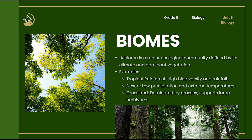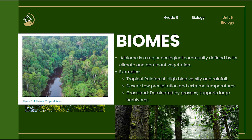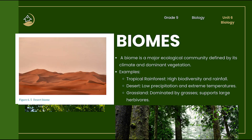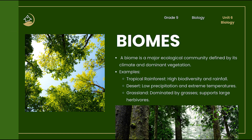Now let's talk about biomes. A biome is a large region of the earth defined by its climate, soil, and dominant plant life. Common biomes include tropical rainforest, desert, and grassland. Tropical rainforest is hot and wet, with lots of biodiversity. Deserts are very dry with extreme temperatures. The grassland biome features large open areas with grasses and grazing animals. Biomes help us understand how climate shapes ecosystems — for example, animals in the cold tundra grow thick fur, while desert animals are active at night to avoid heat.